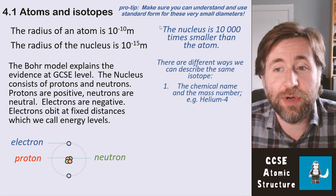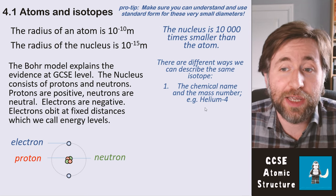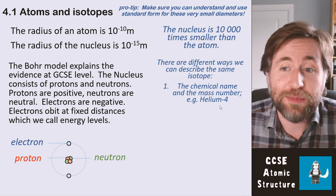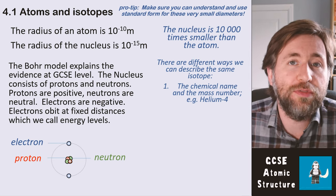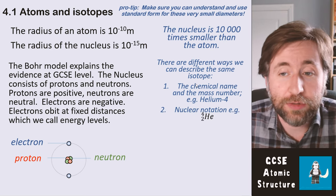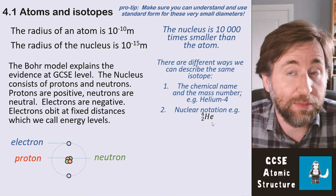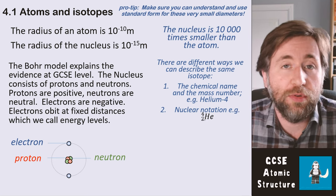There are different ways that we can actually represent that same isotope. We can write it like helium-4, so that's the chemical name helium and its mass number is four, meaning there are four protons and neutrons—a total of four particles in the nucleus. We can write it in nuclear notation, and that's this four and two and then He is the symbol.